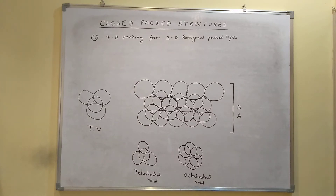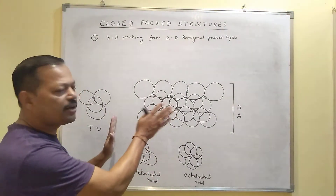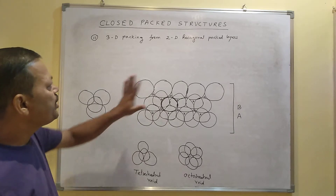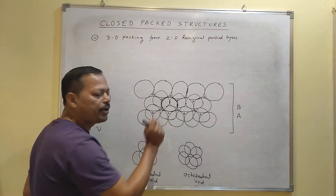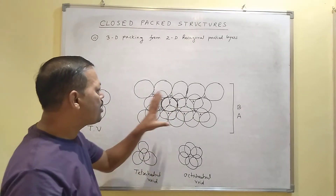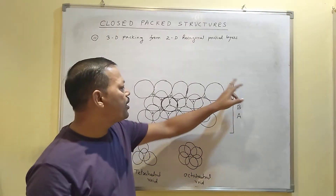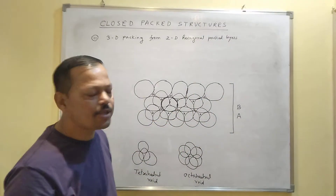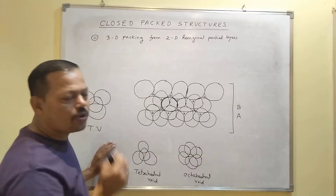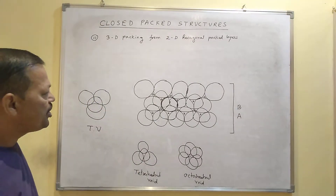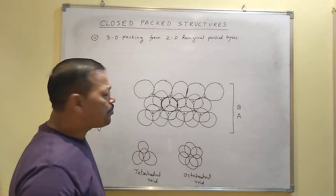Here I have shown only the first layer and second layer particle. The third layer particle is difficult to show, so you have to imagine it. In this arrangement, the third layer particle is placed above the uncovered tetrahedral void, and it is found that the third layer particle and the first layer particle positions are the same. That's why the third layer is also named A, and the fourth layer is similar to the second layer, named B. This type of arrangement is called ABAB type arrangement, also called hexagonal close packing in 3D, and the coordination number is 12.